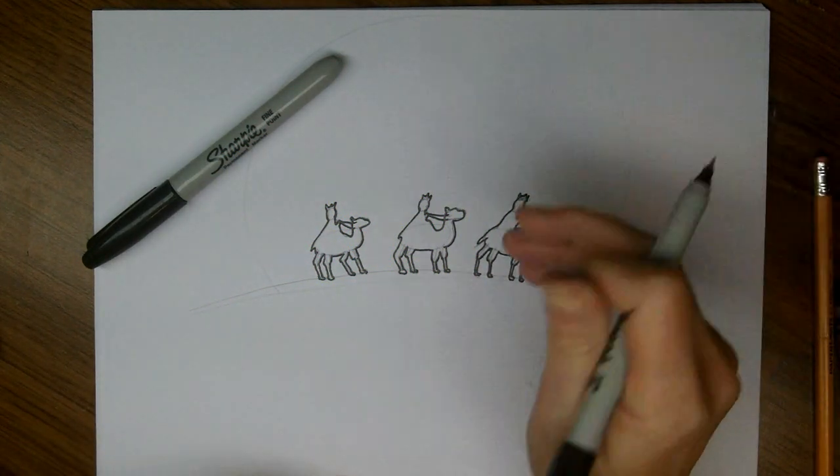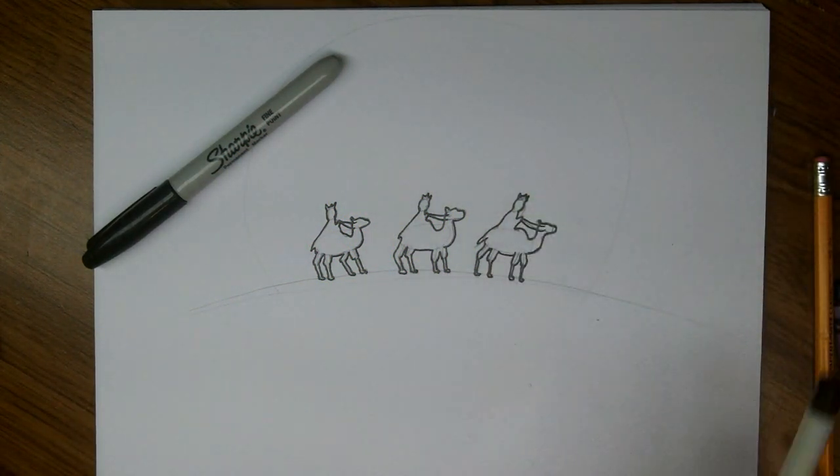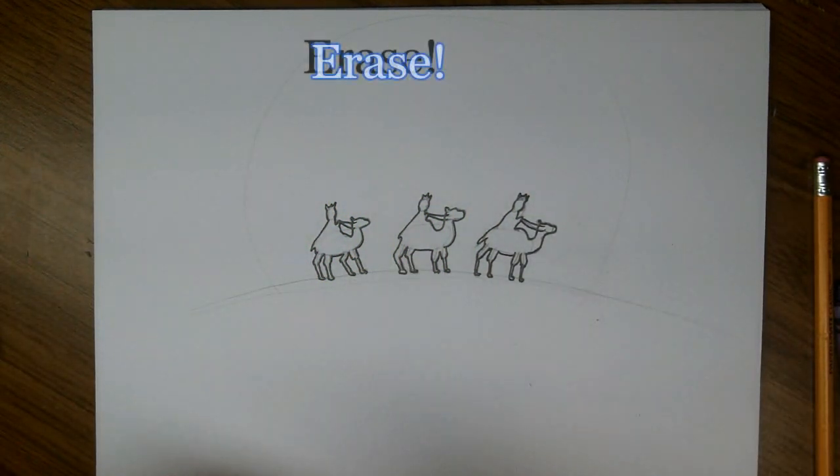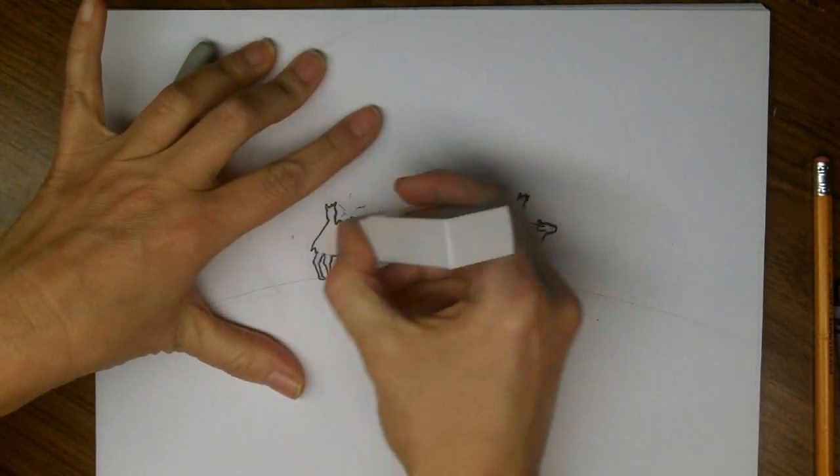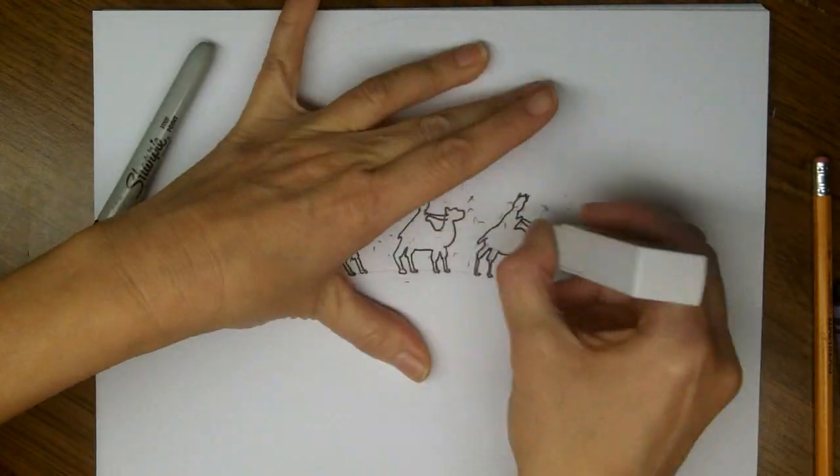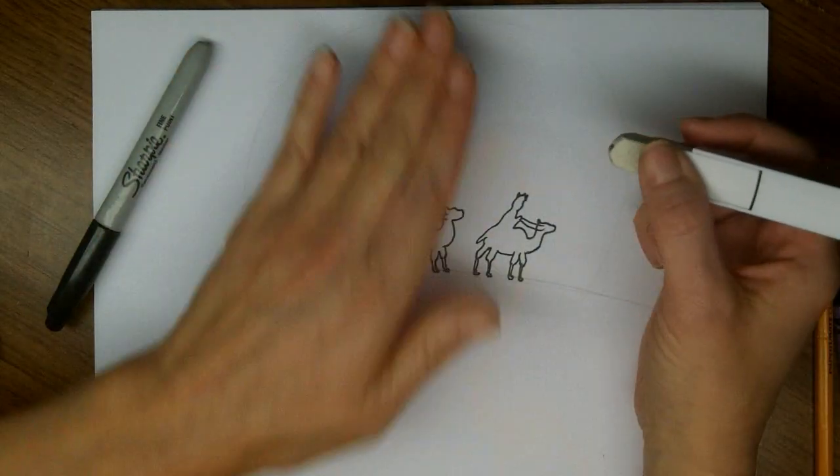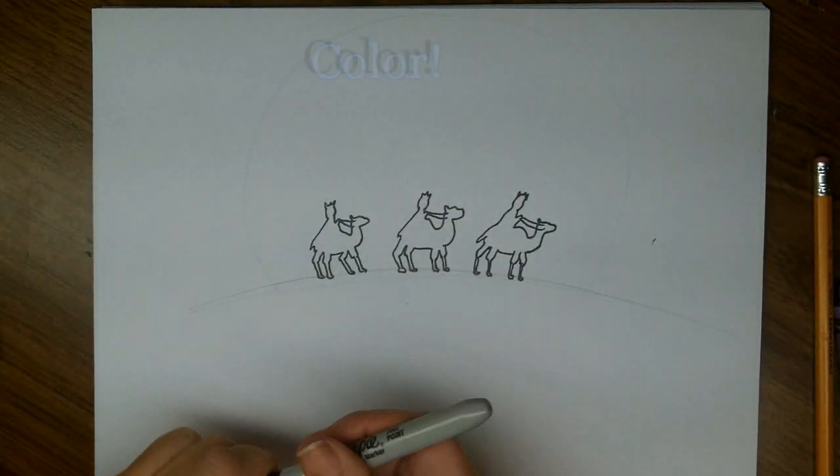So here I've got all my outlines done. And I'm going to switch now over to my thicker sharpie and fill in. Oh, I think I'll just erase these pencil lines first. I don't want to see those through afterward.